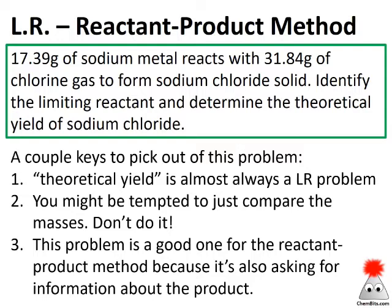Pretty much every time a problem talks about theoretical yield, we're going to have to go through some sort of limiting reactant stoichiometry analysis. Also, a little warning: we can't just look at the two numbers — the two gram amounts of reactants — and make any meaningful prediction. There has to be more than just those two numbers. I know students are really tempted by that; don't do it. Grams alone don't tell us the whole story at all.